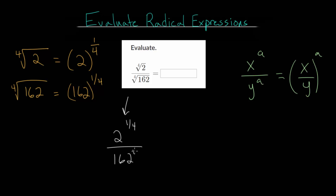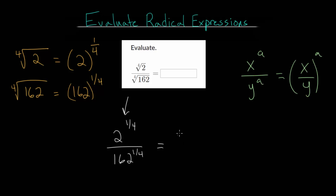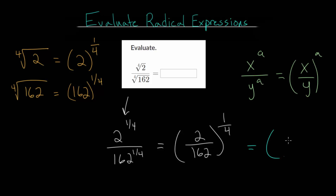They're different bases but raised to the same power. Starting from here, we can rewrite it as one fraction — 2 over 162 — all raised to the 1/4 power. From here, we can simplify this fraction: 2 divided by 162 is just 1 divided by 81 — we divide top and bottom by 2. So we have 1 over 81 raised to the 1/4 power.